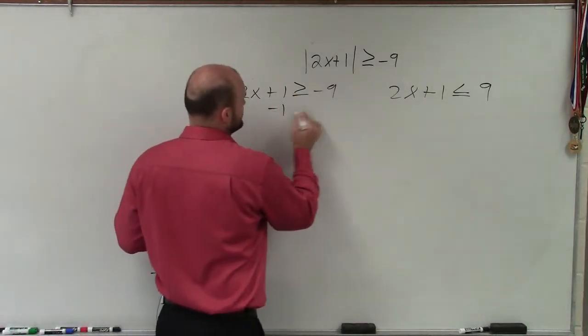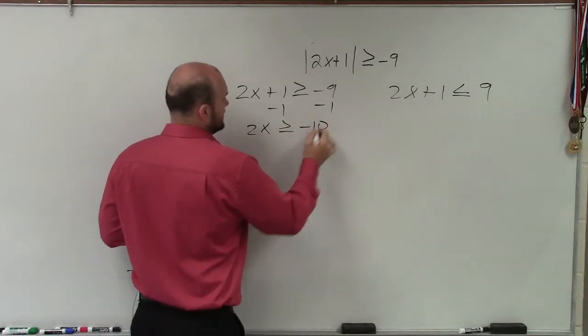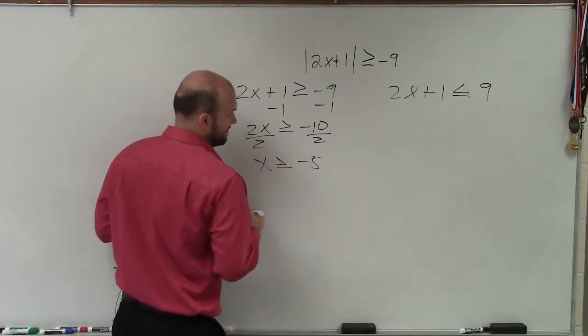So now I just go ahead and solve. So I subtract 1, subtract 1. So I have 2x is greater than or equal to negative 10, divide by 2, divide by 2. x is greater than or equal to negative 5.